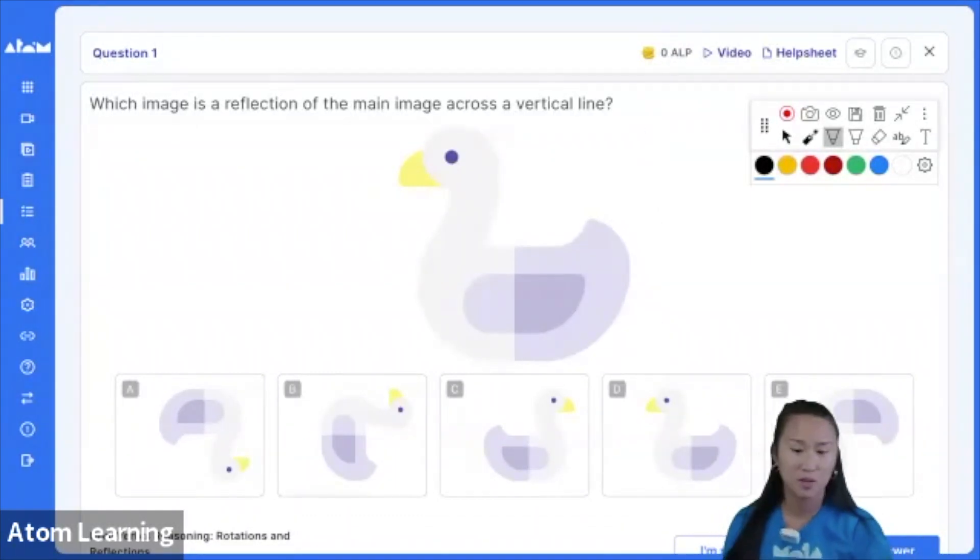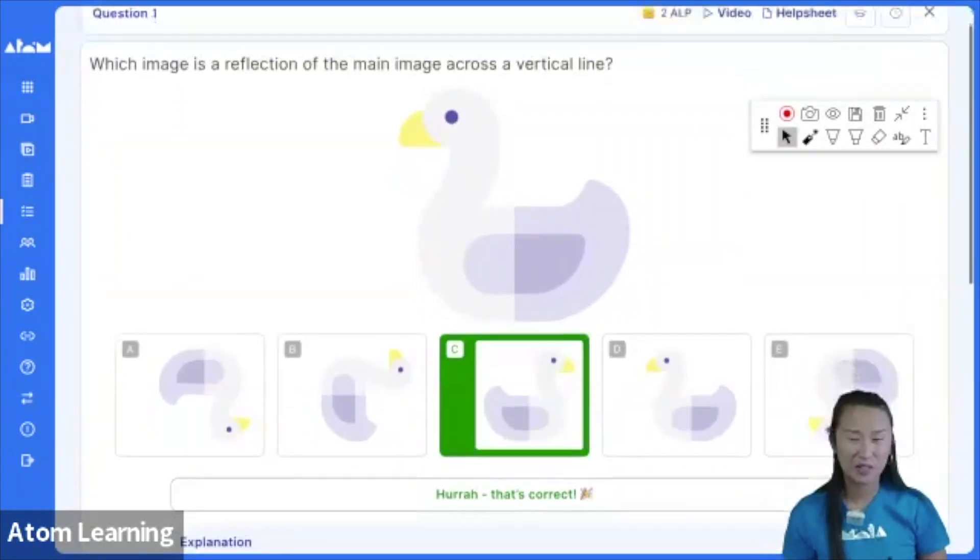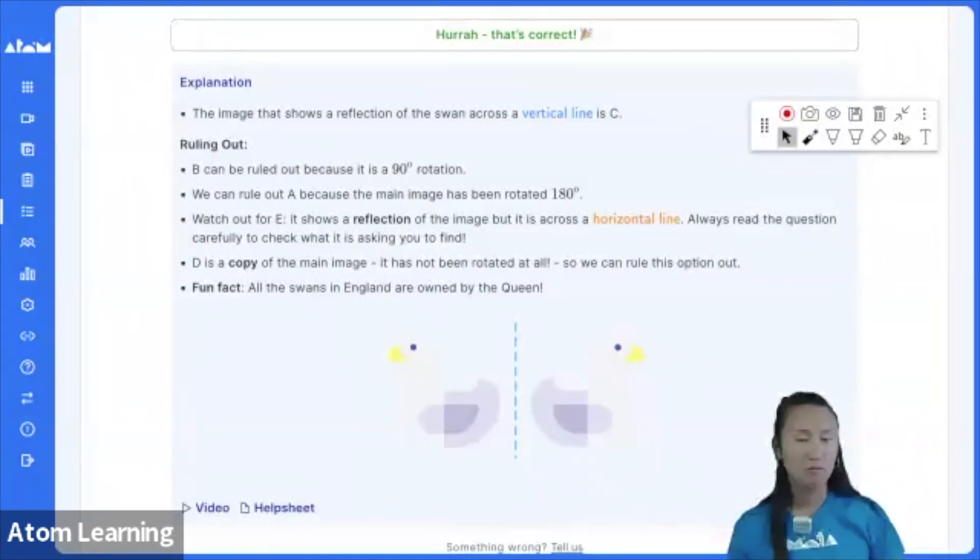And here are our results. The most popular answer was C. Let's take a little look. And C is absolutely right. Well done. So if we look at this image at the bottom, it claims it's a swan. There we go. Not a duck at all.